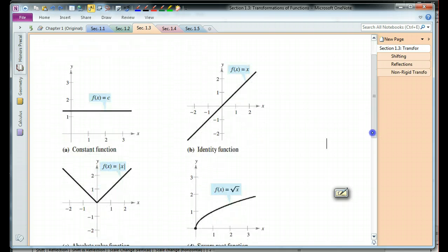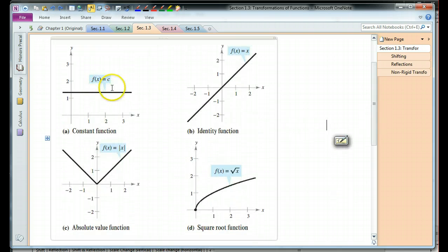The simplest one is called the constant function, where f of x just equals a constant, and that's a horizontal line. And then we have the identity function, where f of x equals x, so that's a line of slope 1 passing through the origin. And we also have an absolute value function, where it's a v-shape with a vertex at 0, 0.